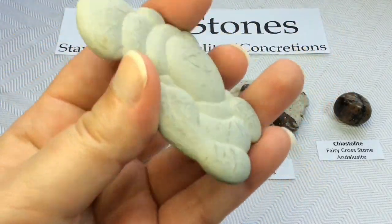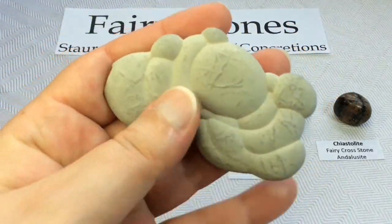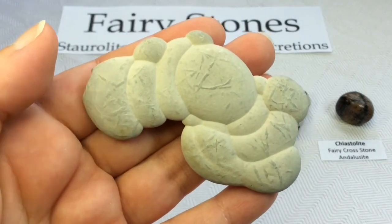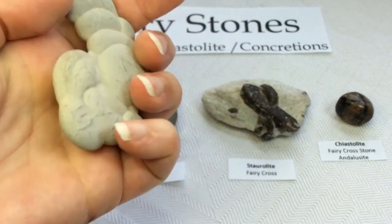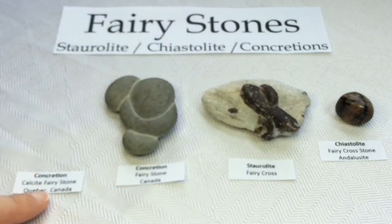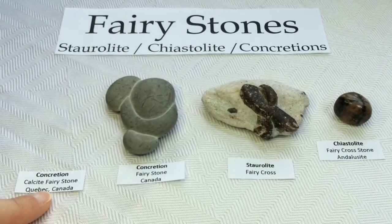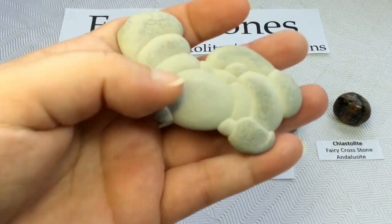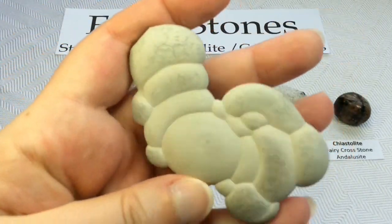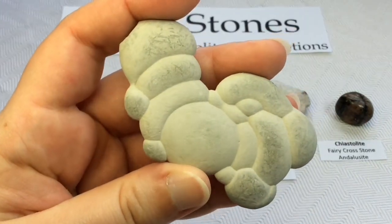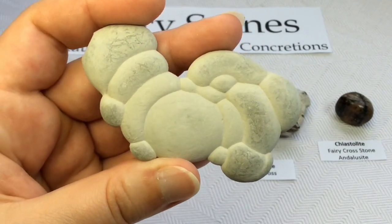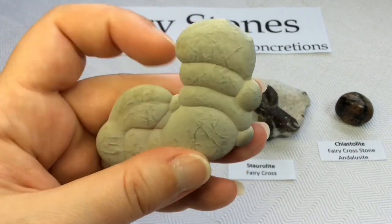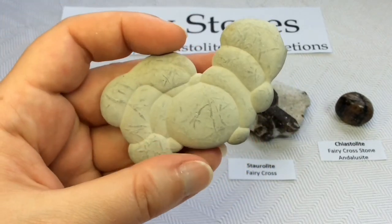This one I got recently and I absolutely love it. It's not only lighter in color than the other one, it's much lighter in weight as well. This one was labeled as a calcite fairy stone from Quebec, Canada. Isn't it a beauty? It's much more intricate than my other one.